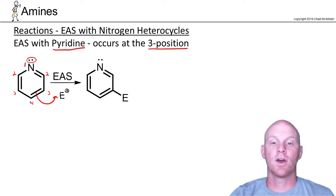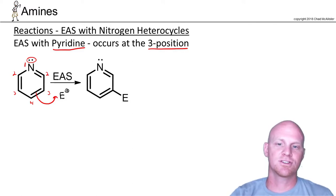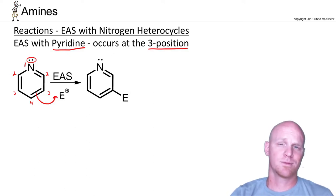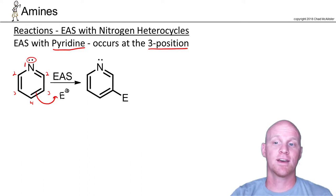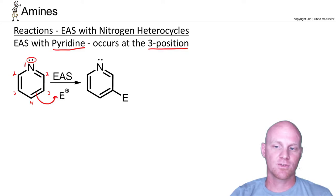The big deal is that if you do the EAS reaction at the two or four position, you get a really ugly intermediate. That intermediate would share the positive charge on the nitrogen, and in this case, nitrogen would not have a filled octet — making it really unstable. So it's not that position three is so great; it's that positions two and four give horribly unstable intermediates. That's why EAS occurs at position three with pyridine.